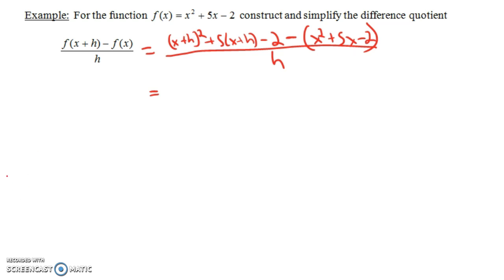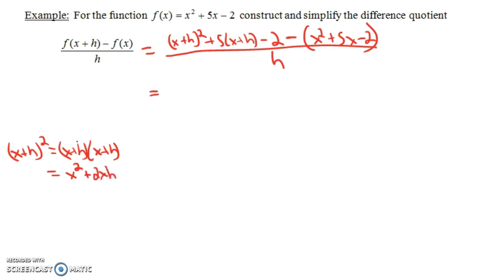Let's do some scratch work. (x plus h) squared is the same as (x plus h) times (x plus h). If you FOIL this out: x times x gives x squared; multiplying the inner and outer terms gives xh and xh, so plus 2xh; and h times h gives h squared. So (x plus h) squared is not just x squared plus h squared — it's x squared plus 2xh plus h squared.